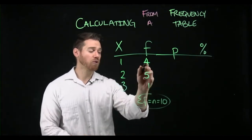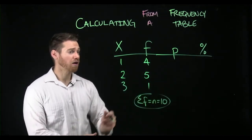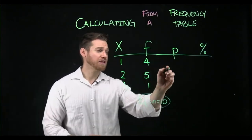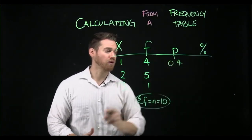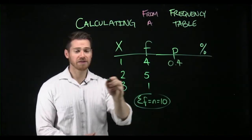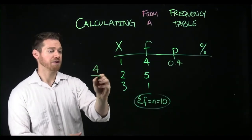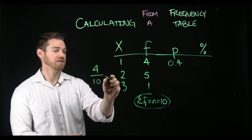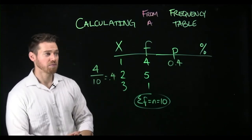So if four of those 10 are a one, then the P value here is gonna be 0.4. So all we've done here is said four out of 10, and gotten the answer, 0.4.